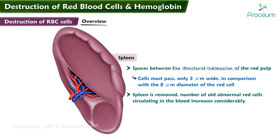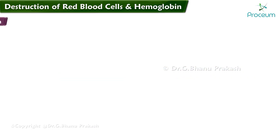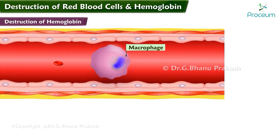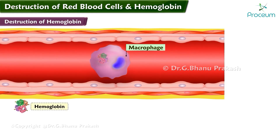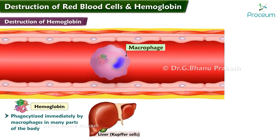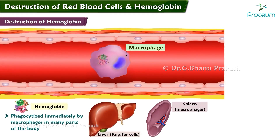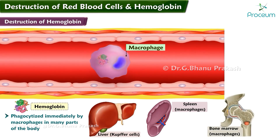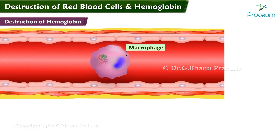Destruction of hemoglobin: when red blood cells burst and release their hemoglobin, the hemoglobin is phagocytized almost immediately by macrophages in many parts of the body, but especially by the Kupffer cells of the liver and macrophages of the spleen and bone marrow.